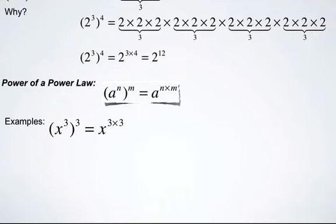Examples. x to the third, again to the power of 3. We would do 3 times 3. If we were to write it out, we would have 3 x's, 3 x's, and 3 x's. So 9 x's in a repeated multiplication, so x to the ninth.